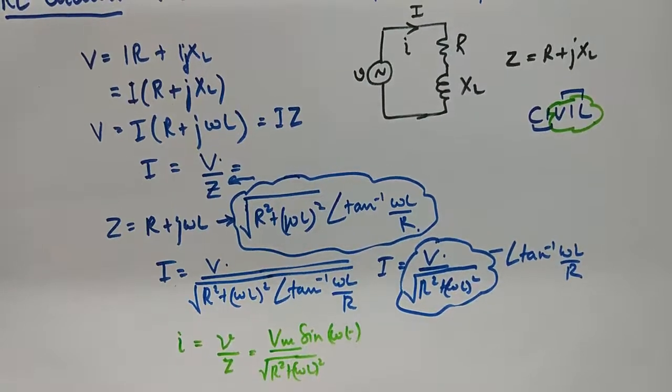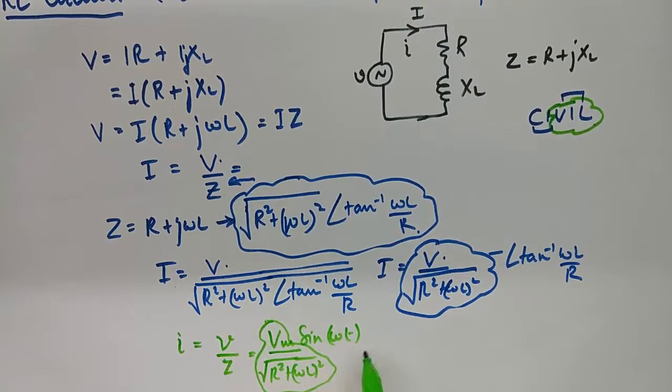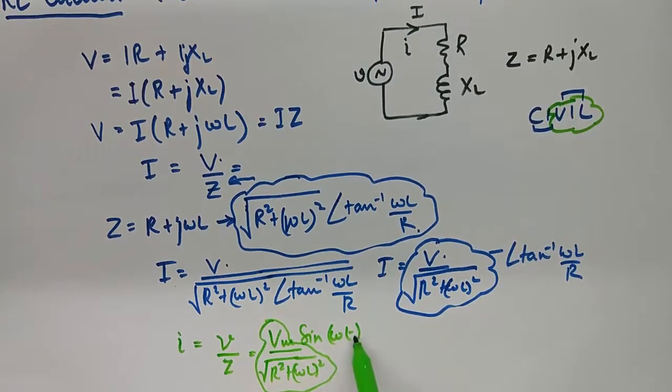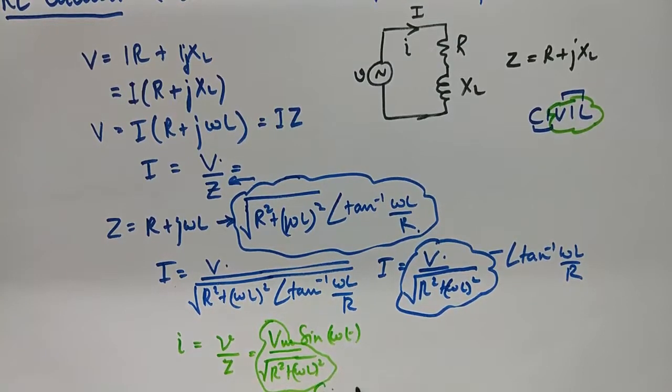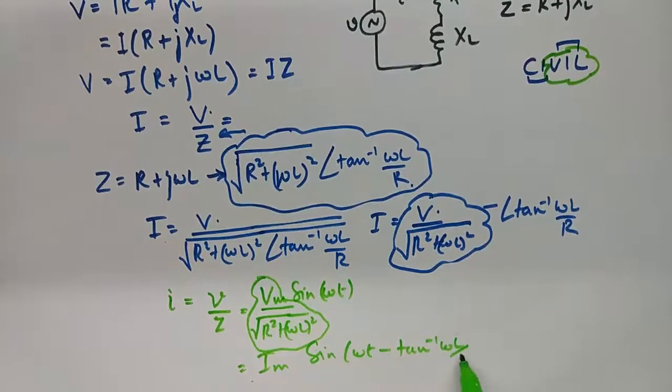To formulate IM, this part becomes IM, and of course the angle will be compensated here. So my angle becomes omega T minus tan inverse omega L upon R.